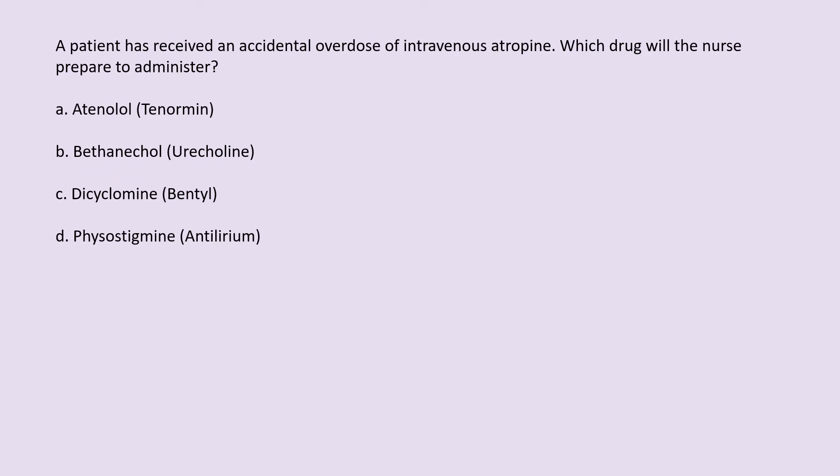A patient has received an accidental overdose of intravenous atropine. Which drug will the nurse prepare to administer? A. Atenolol (Tenormin). B. Bethanechol (Urecholine). C. Dicyclomine (Bentyl). D. Physostigmine (Antilirium).